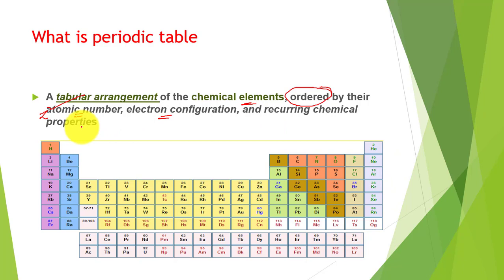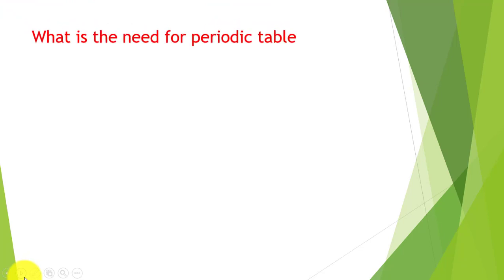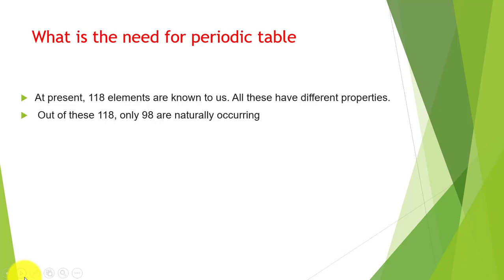Now what was the requirement, what was the need? Why did chemists work on this arrangement? What is the need for a periodic table? At present, 118 elements are known to us. All these have different properties, and discovery is still going on. New elements are still being discovered. Some elements have been named, some are just about to be discovered. Out of these, only 98 are naturally occurring. Different elements were being discovered in the past.